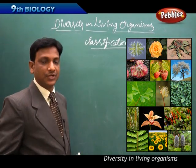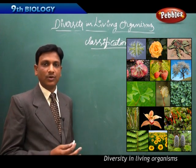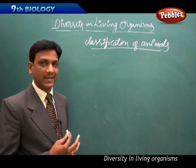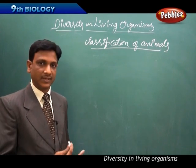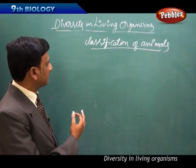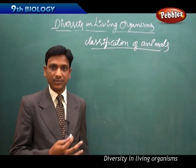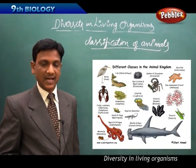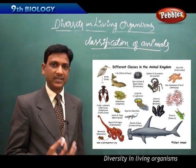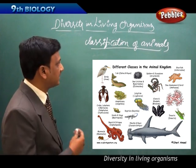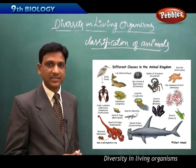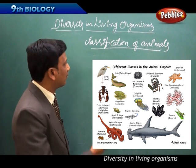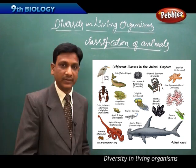Now we are going to talk about the classification of the animal kingdom. We have seen Monera, Protista, Fungi, and Plantae; now we come to Animalia. In this animal kingdom, animals are multicellular and heterotrophic in nutrition — they take their food from other organisms, either plants or animals. Animals are classified according to the differences and similarities they have, based on body complexity.